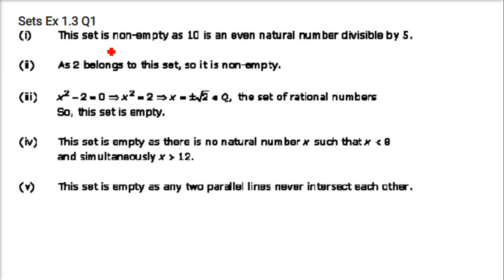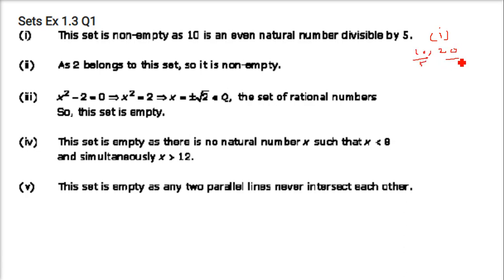Which of the following are examples of empty set? The first one is the set of all even natural numbers divisible by 5. We have certain numbers like 10, 20 — they are divisible by 5, so this set is not empty. It has various values.